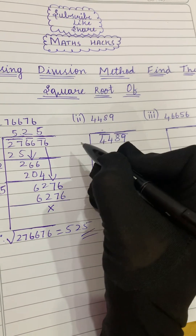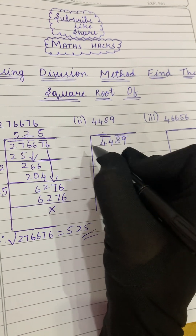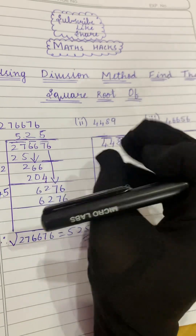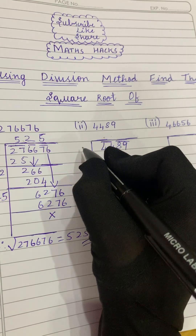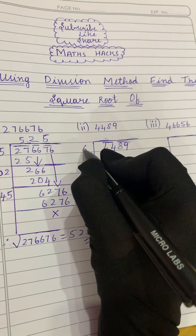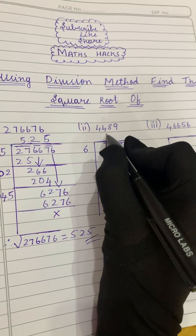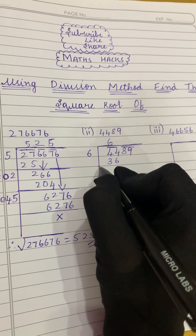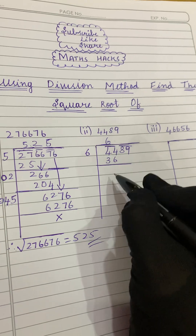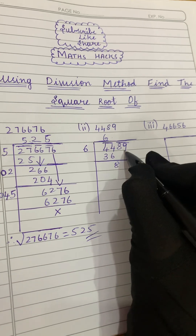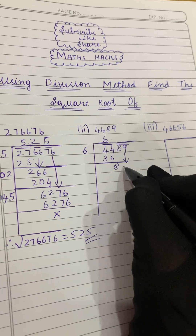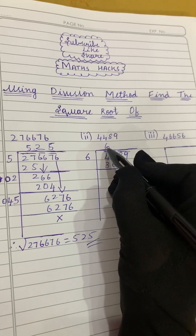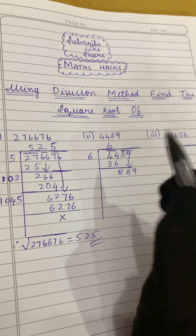We take a number whose square is closest to 44. That's 6, because 6×6 = 36. So 44 minus 36 gives 8. Now we bring the second pair down: 89, giving us 889.